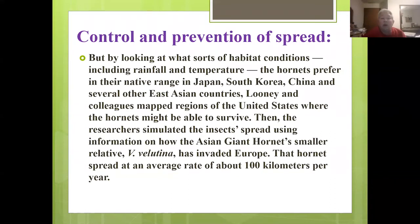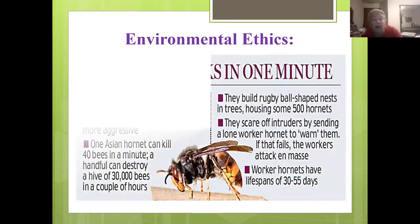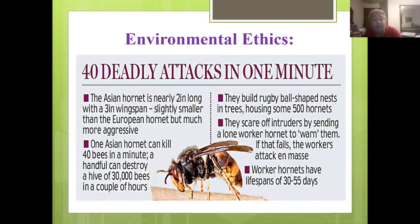By looking at habitat conditions — including rain, pollen, and temperature — in their native range of Japan, South Korea, China, and East Asian countries, scientists mapped regions in the United States where the hornets might survive. Asian giant hornets thrive where it's mild and rainy, making large parts of the Pacific Northwest prime habitat. One Asian hornet can kill 40 bees in a minute; a handful can destroy an entire hive of 30,000 bees in a couple of hours. That's the biggest reason we don't want them in the United States — it will destroy our honeybee industry.